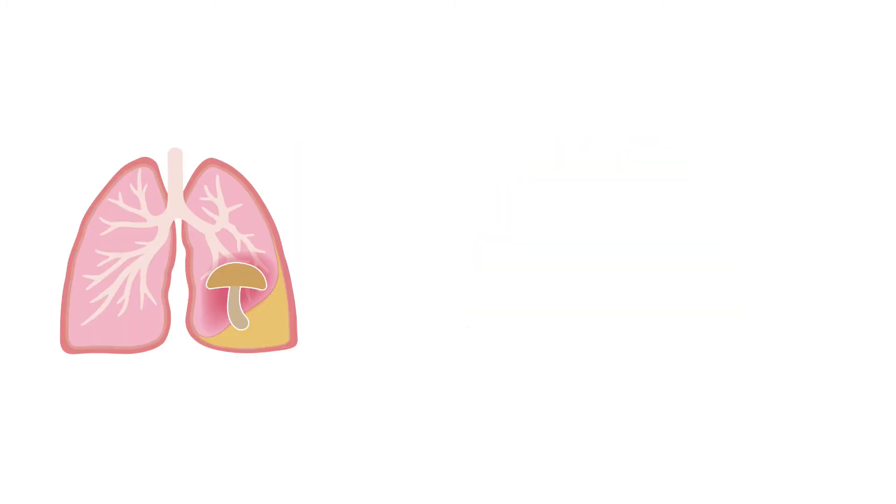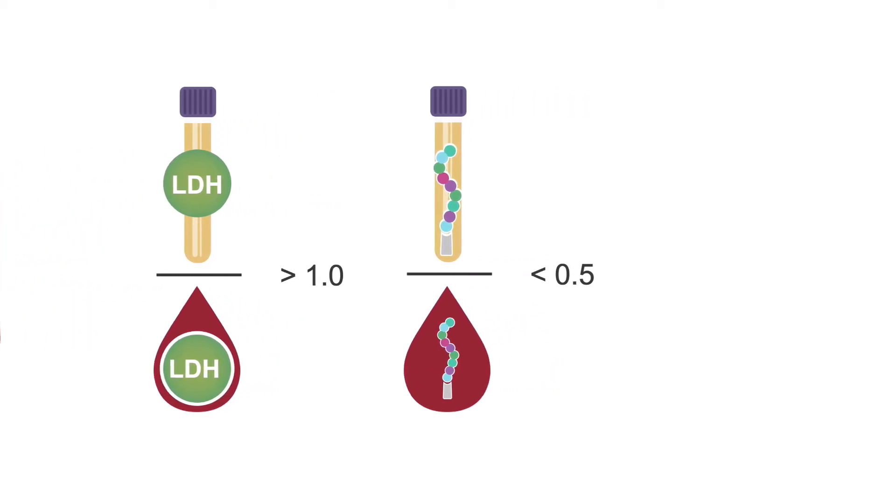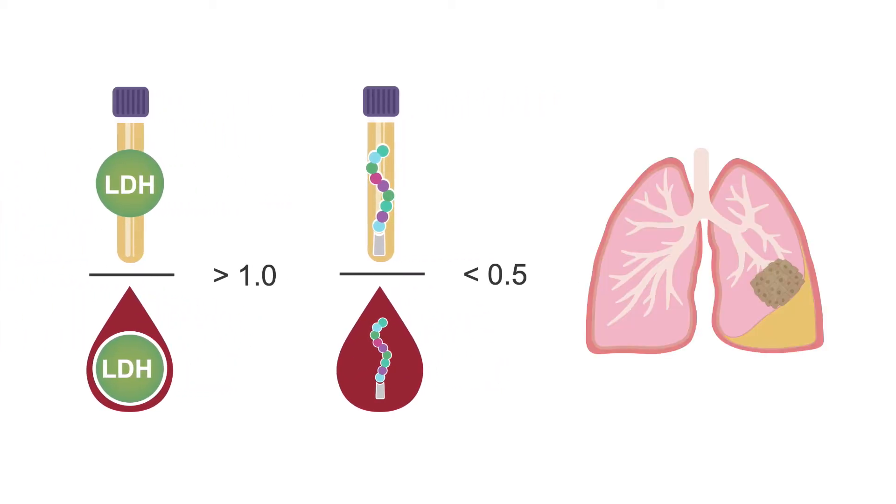Pleural fluid secondary to pneumocystis jirovecii pneumonia has the characteristic finding of a pleural fluid lactate dehydrogenase to serum lactate dehydrogenase ratio greater than 1 and a pleural fluid protein to serum protein ratio of less than 0.5. Such a pattern may also be suggestive of malignancy.